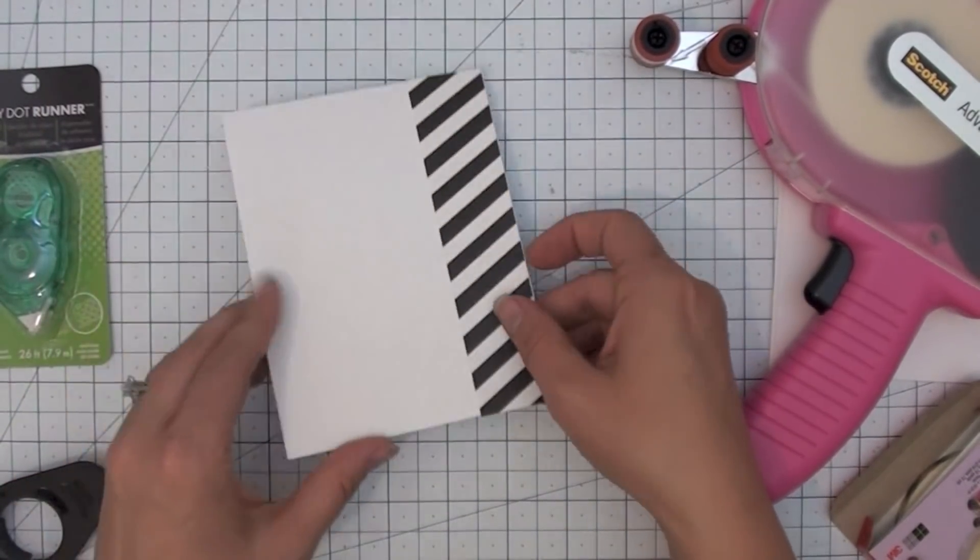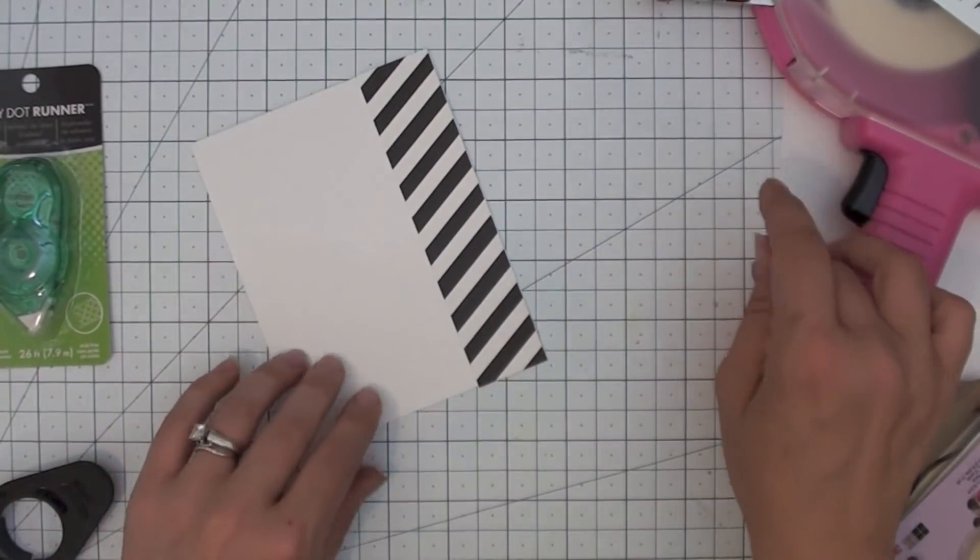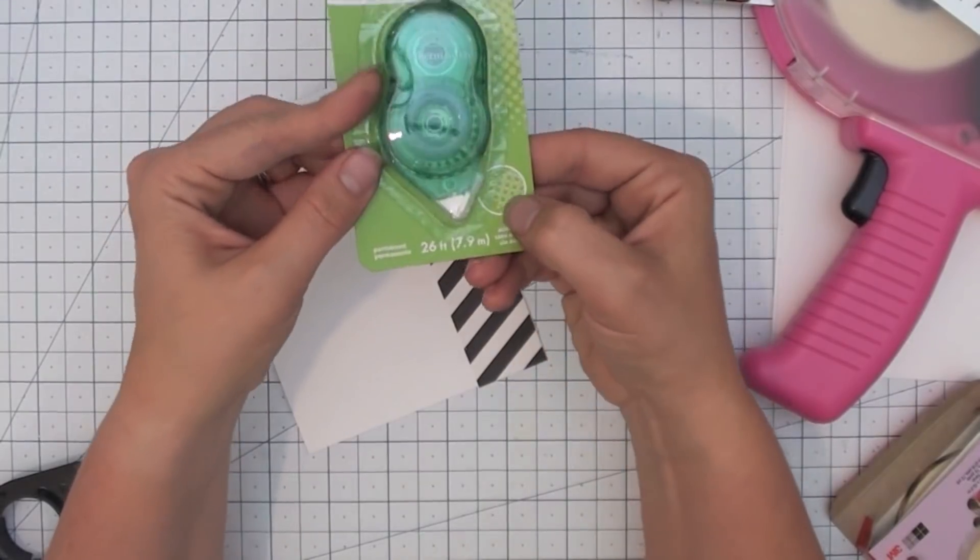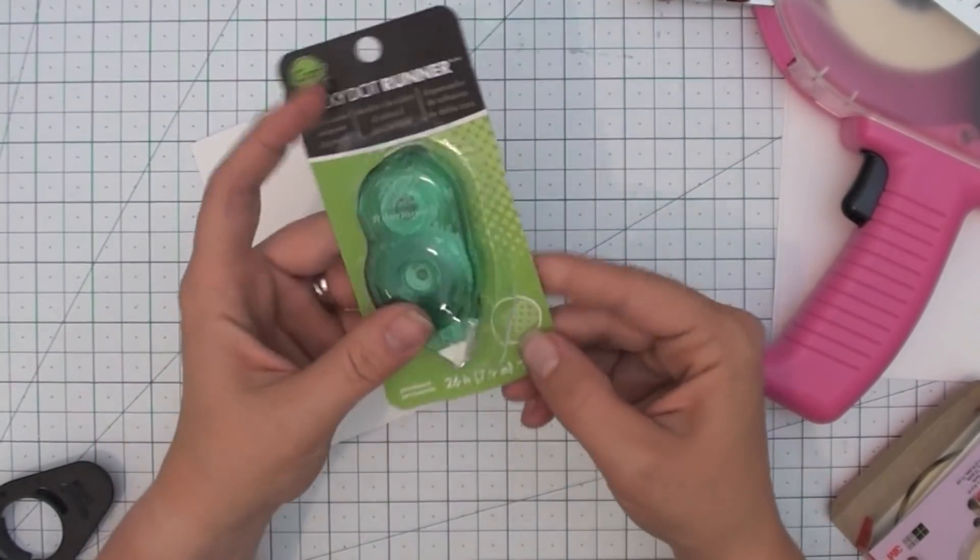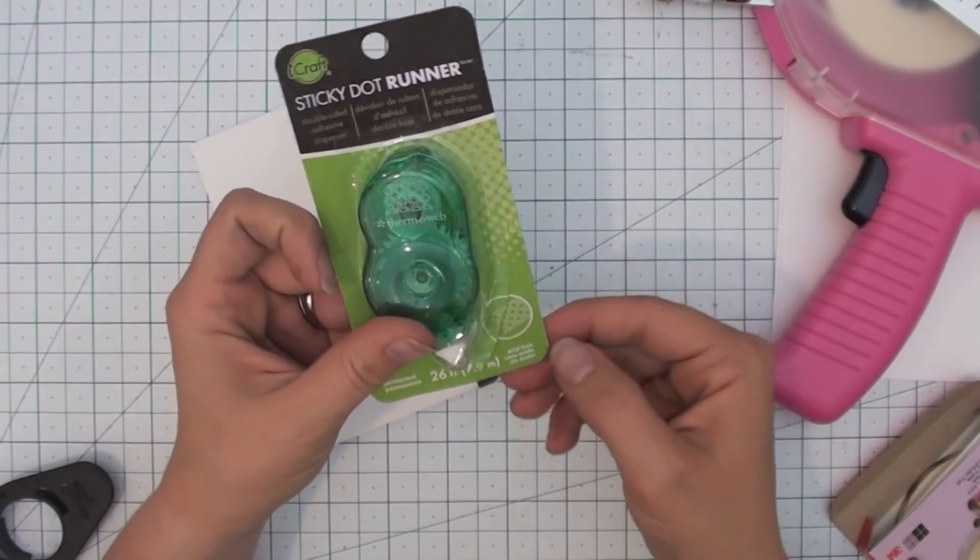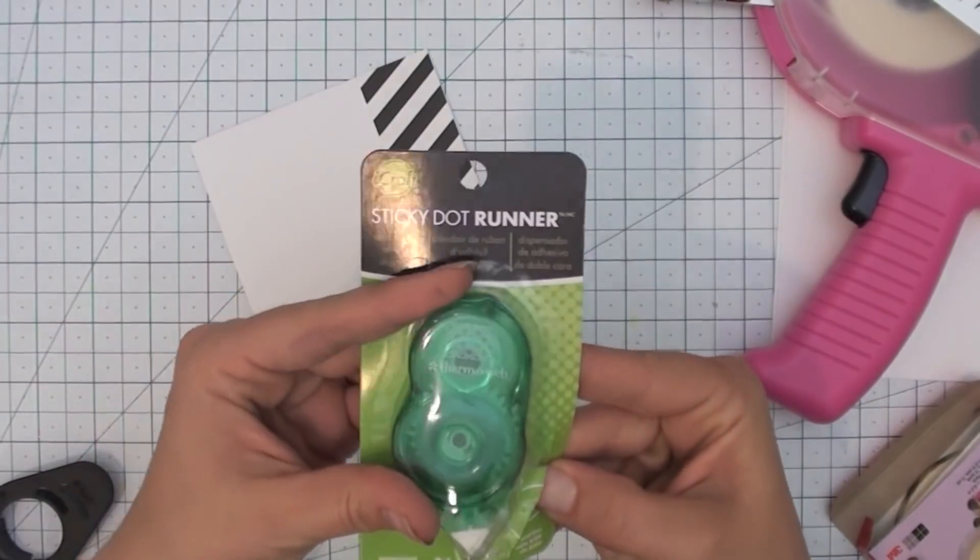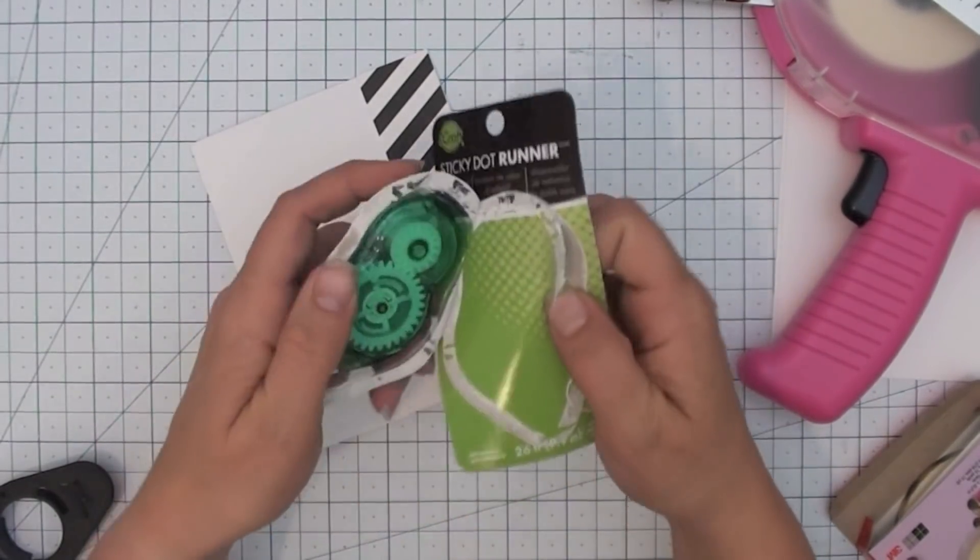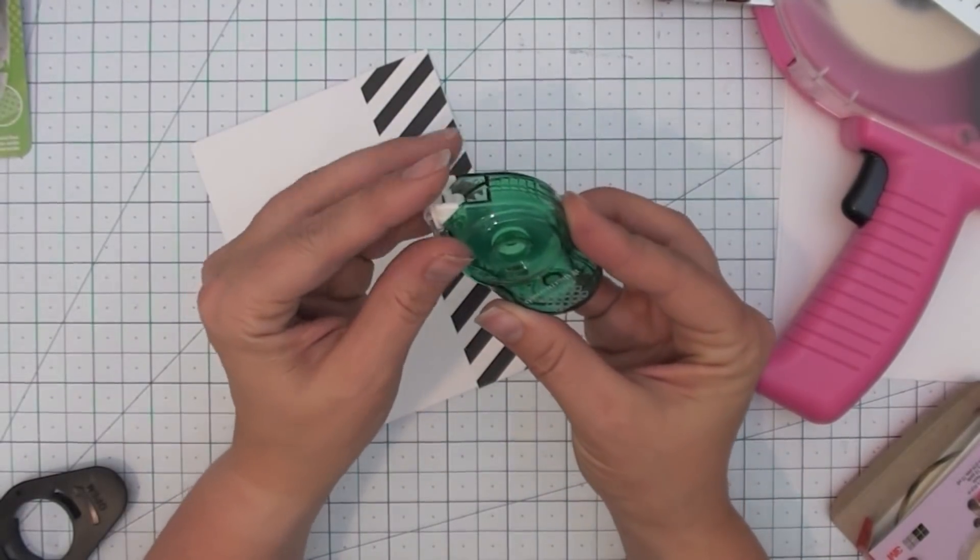The next little product I've got here is this little sticky dot runner. Now this is a smaller tape runner. Some of these are refillable and some of them aren't, and often you'll be able to find them in different patterns. This is a dot runner and it's really preference—they work pretty much the same, but this one is much smaller and you will go through these much faster.